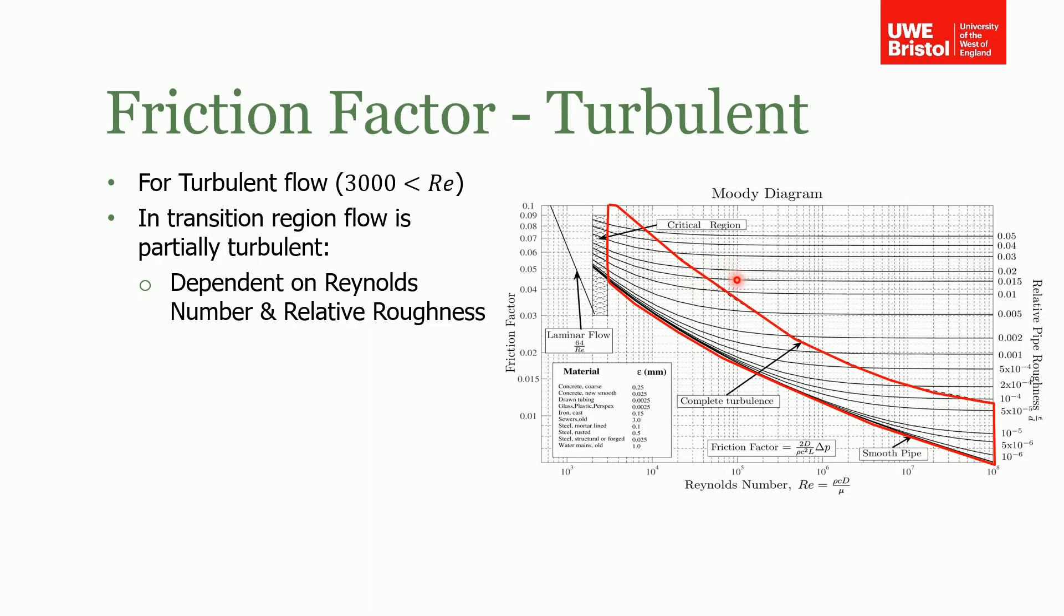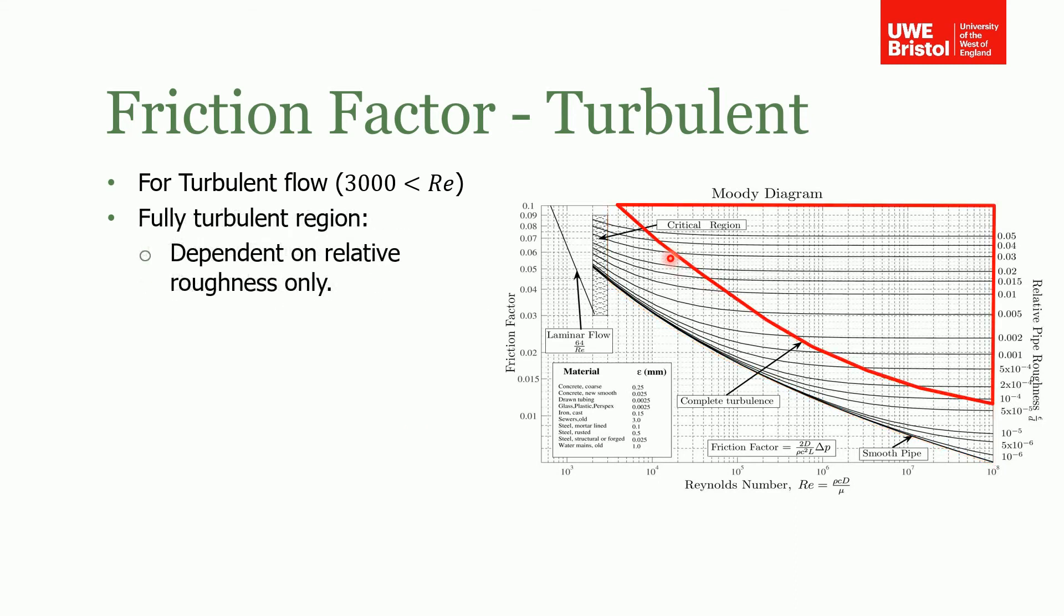The transition from partially to fully turbulent flow is when this line is no longer dependent on Reynolds number. If we look at the fully turbulent region, you can see in this area for each relative pipe roughness this line is pretty much horizontal. What that's basically indicating is that it's independent of Reynolds number.